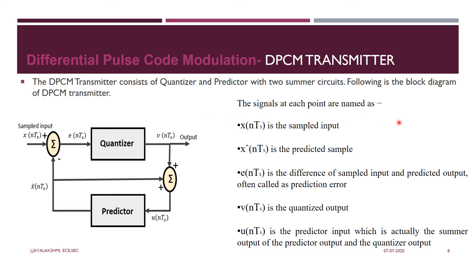The signal points are explained as follows: x(nTs) is the sampled input, x-cap(nTs) is the predicted sample, and u(nTs) is the difference of the sampled input and the predicted output — that difference is your prediction error. V(nTs) is called the quantized output. U(nTs) is the predictor's input, which is actually the sum of two signals: one is the quantized input and another is the predictor output. This output coming out of the quantizer along with the predictor in the feedback path is going to be your DPCM signal.